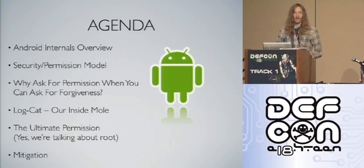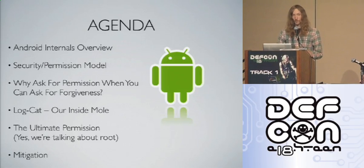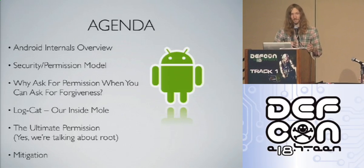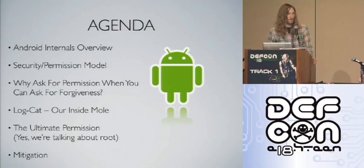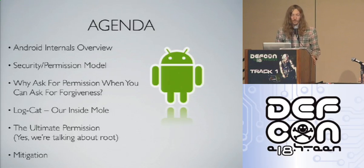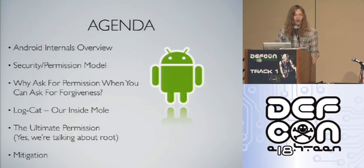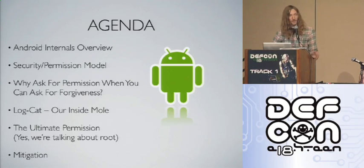The things we're going to cover today: a brief overview of Android internals to get people without context up to speed. Then we'll talk about the security and permission model and how sandboxing works. After that, we'll talk about fun things we can do with and without permissions, how we can use system logging to leverage a lot of information, rooting Android phones, and mitigation approaches.